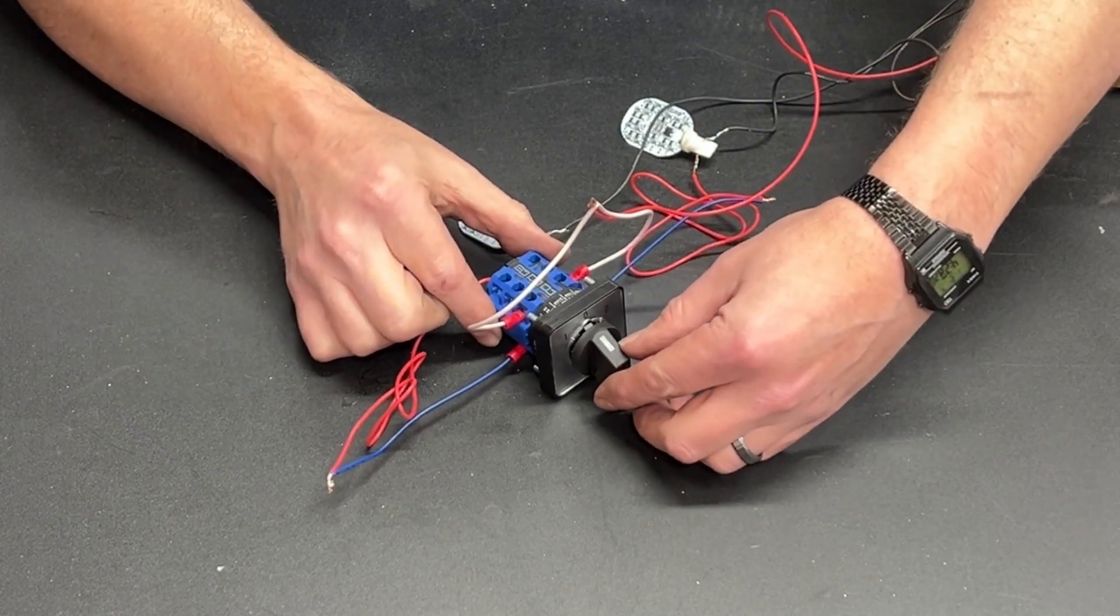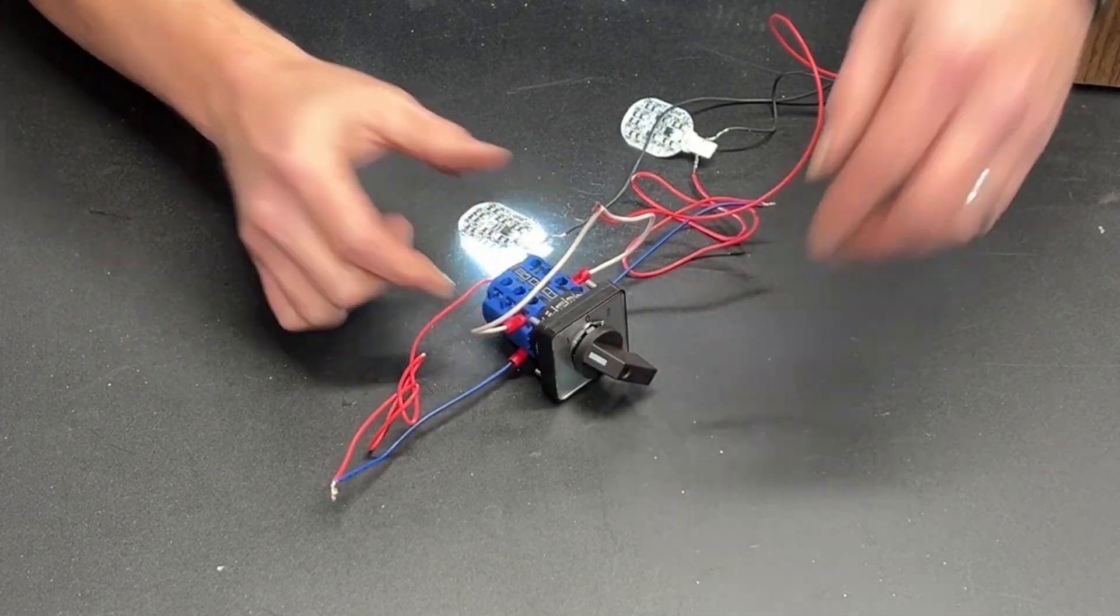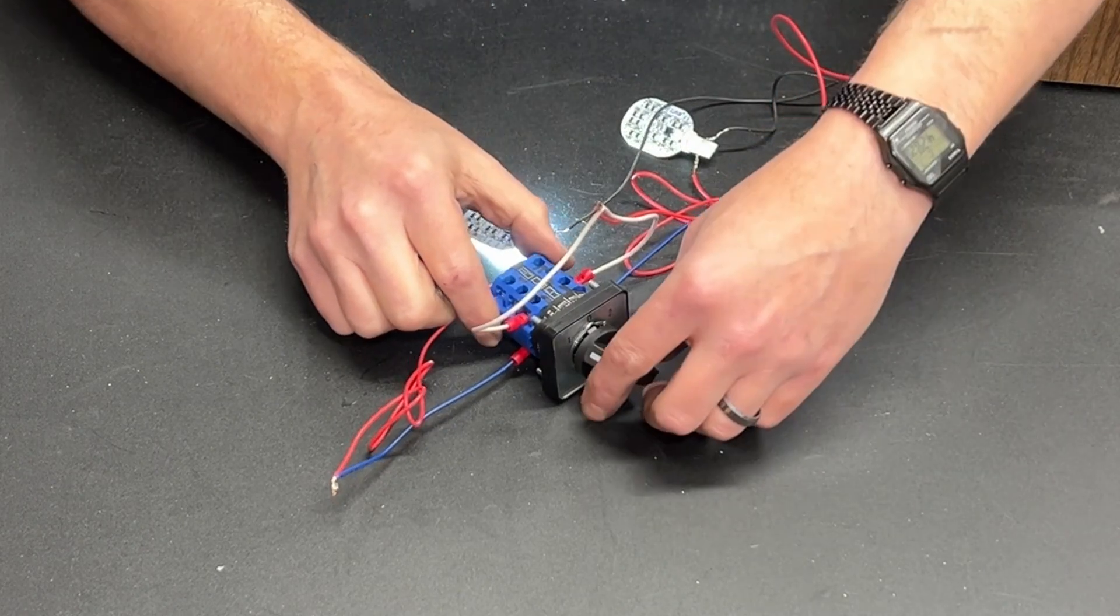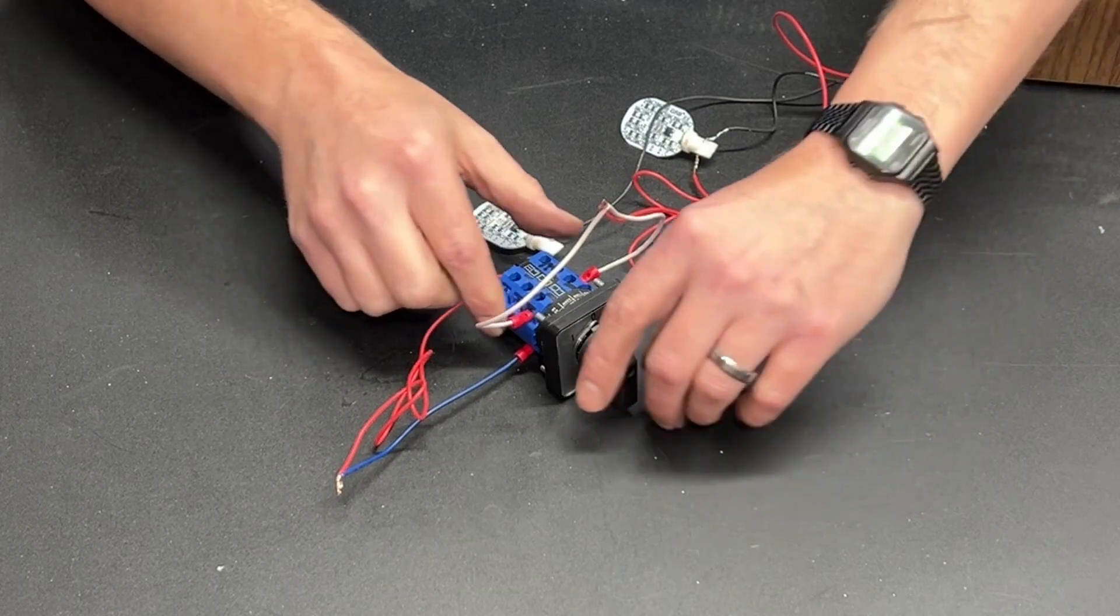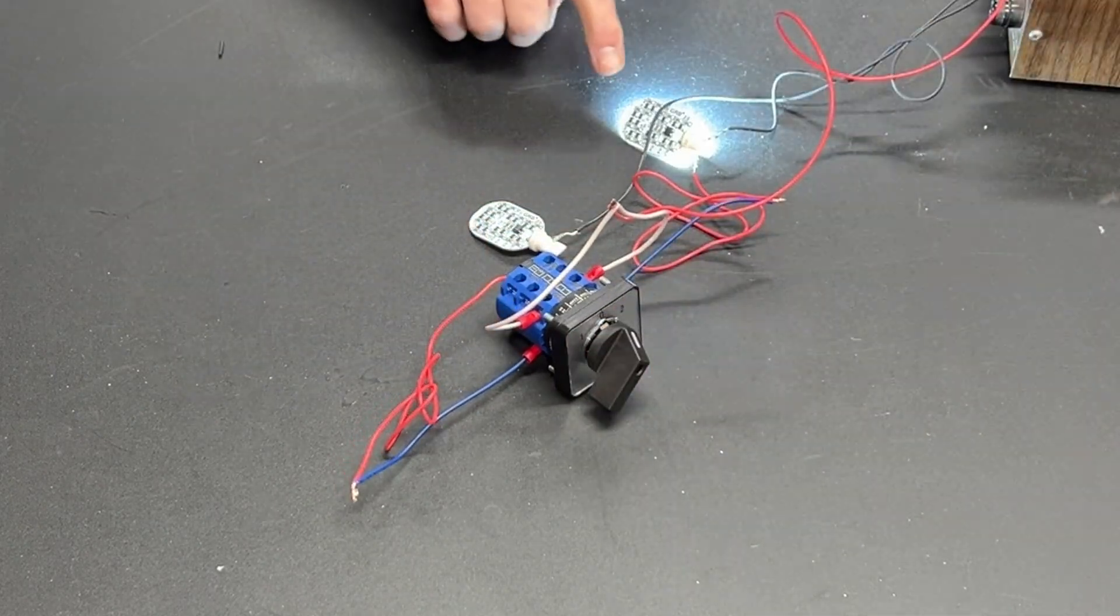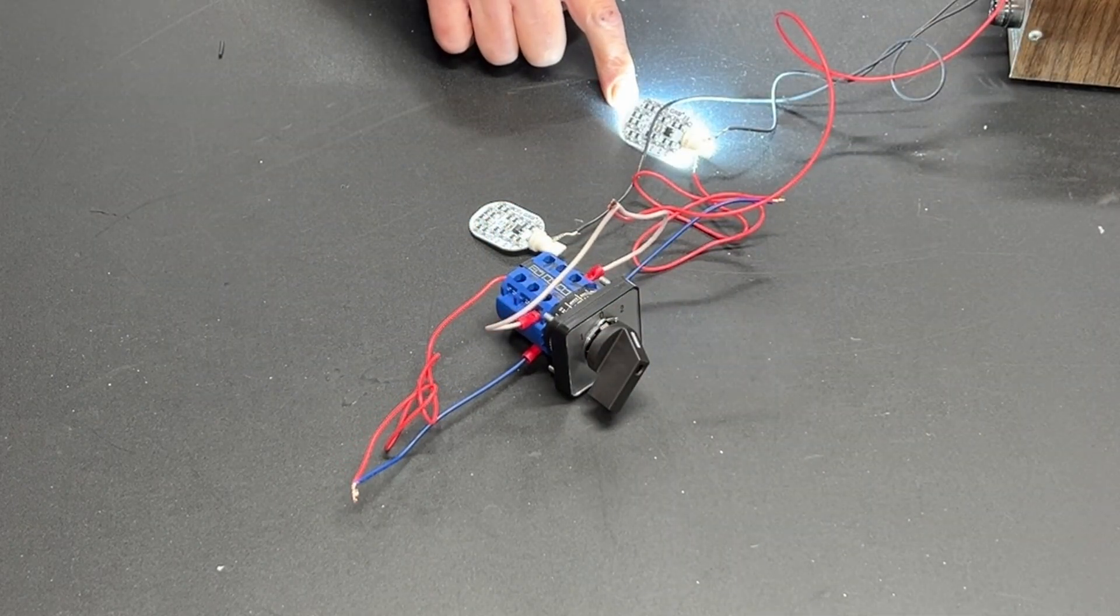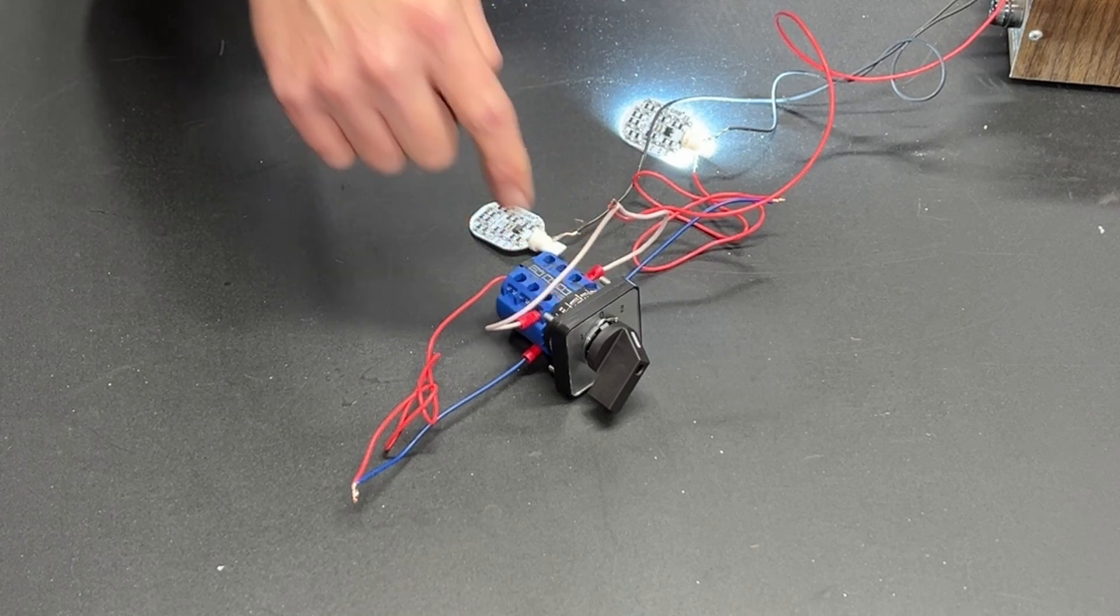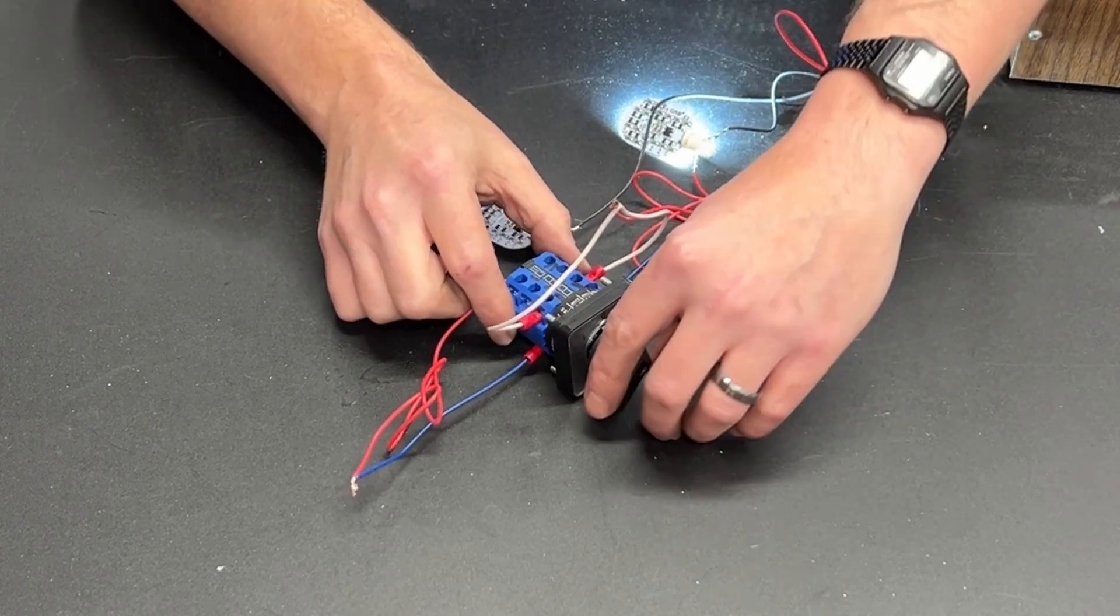All right if we turn it one direction you can see that that light has come on. If we turn it off, both of them are off. We go the other direction. Now we have light over here. By connecting this terminal to this terminal we have made this a double throw switch.